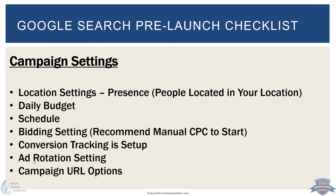For the ad rotation setting — covered more in the optimizing ads video — most of the time you'll set it to not optimize, meaning you won't auto-rotate. That means you're doing it manually, so switch it off the default so you have full control over it. You decide when to rotate ads manually.